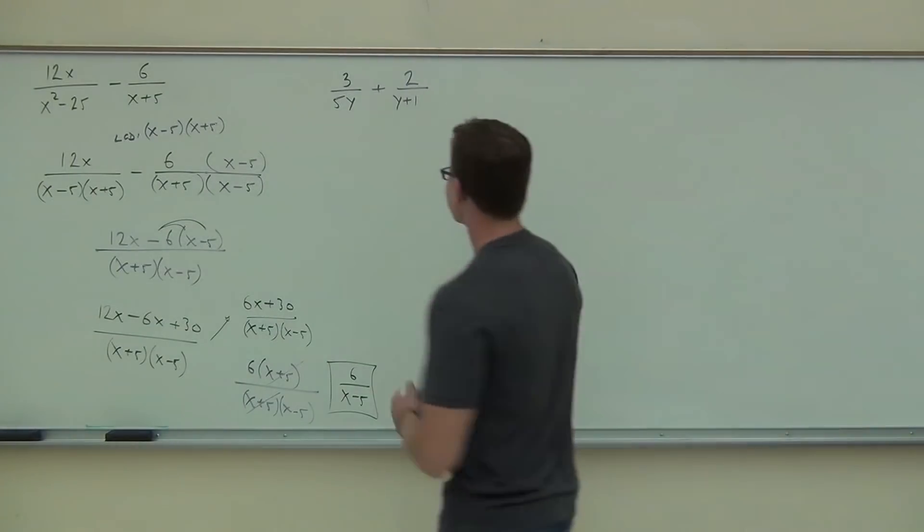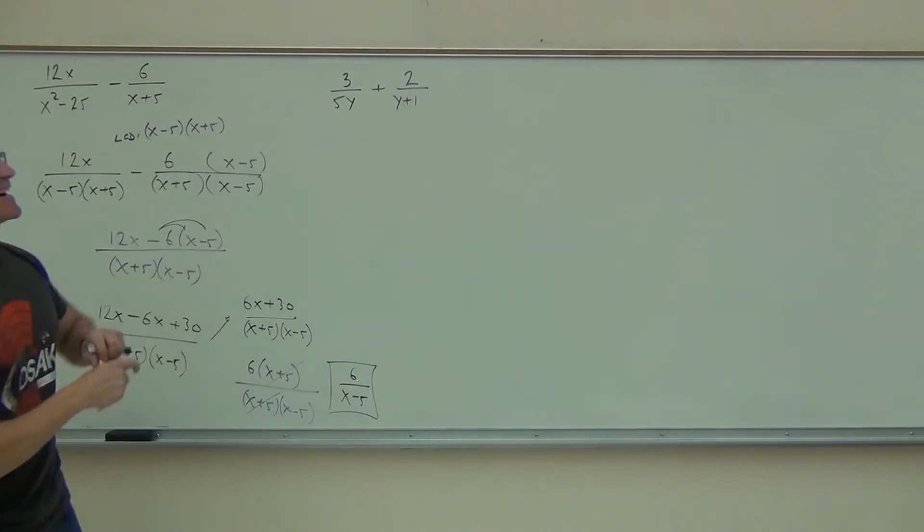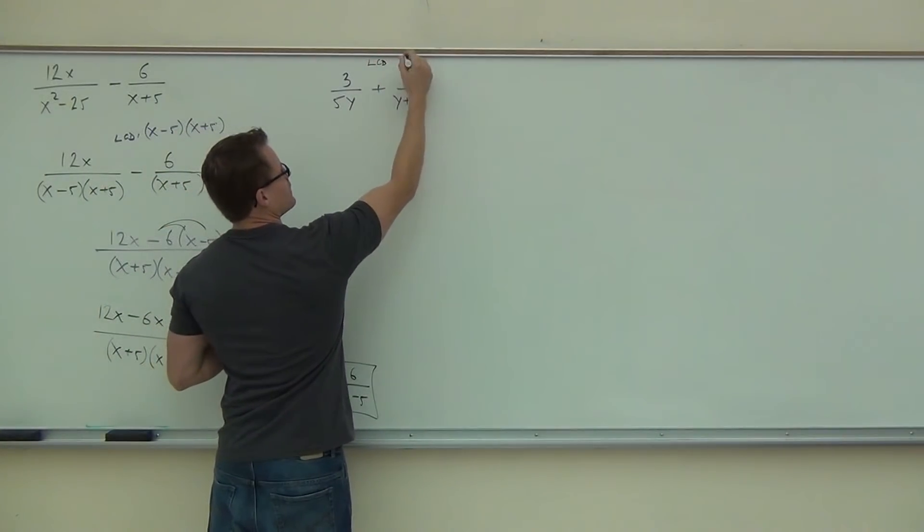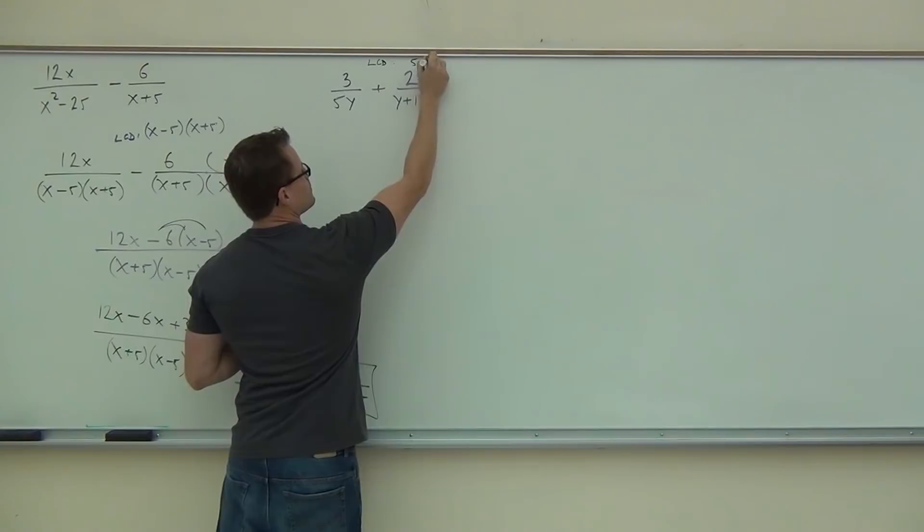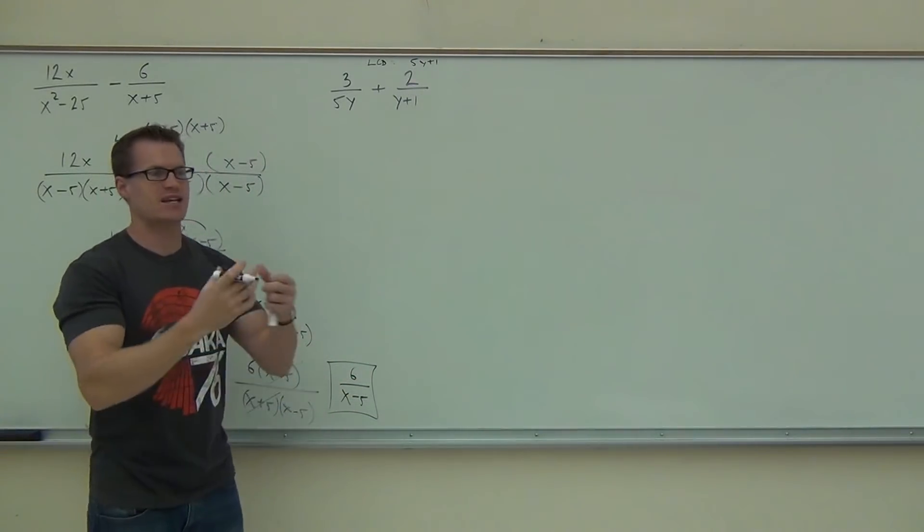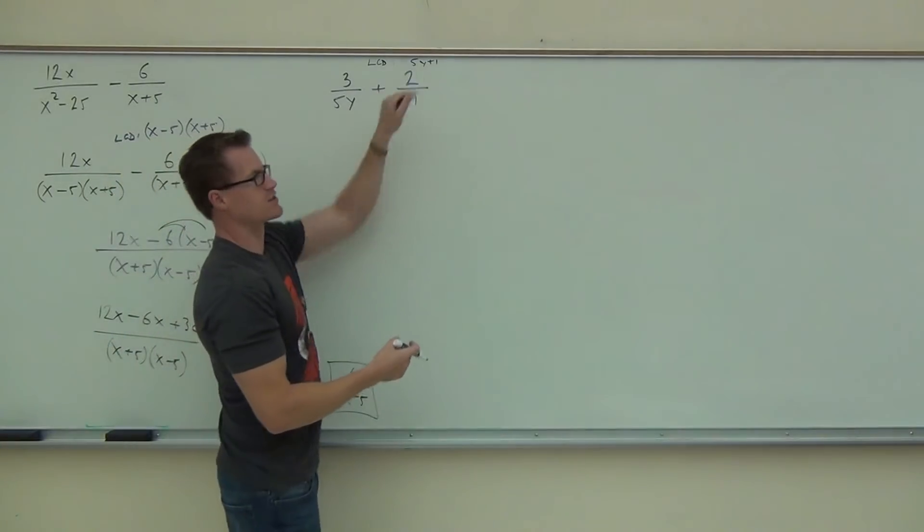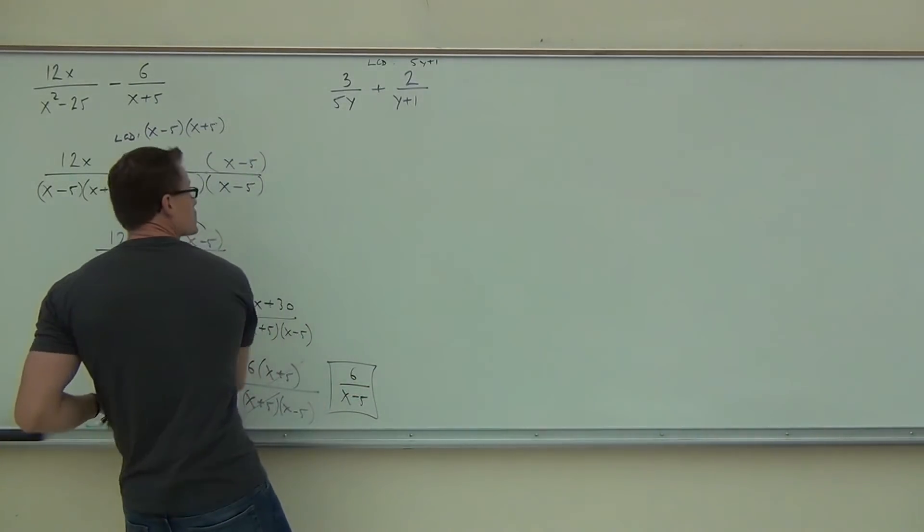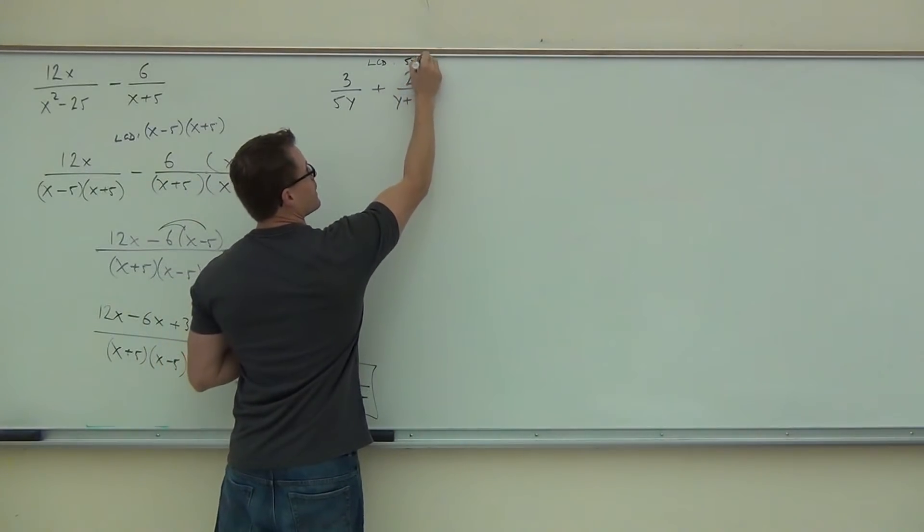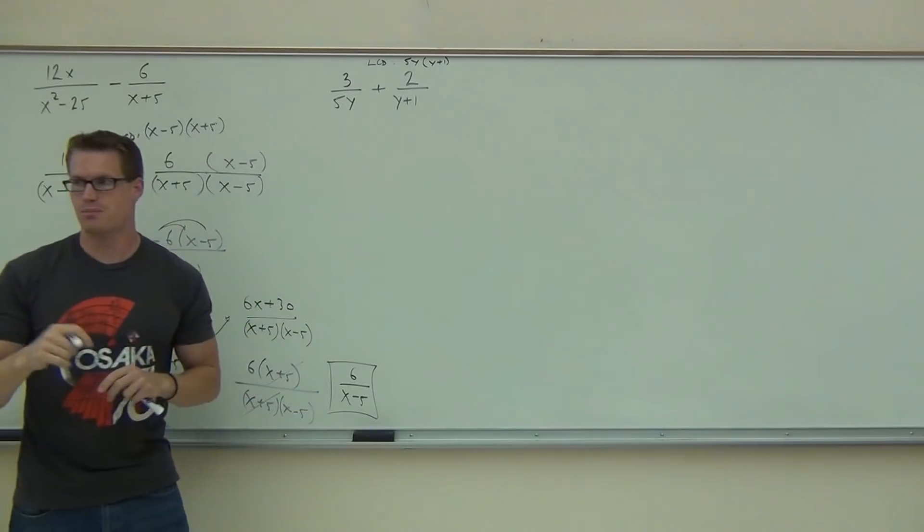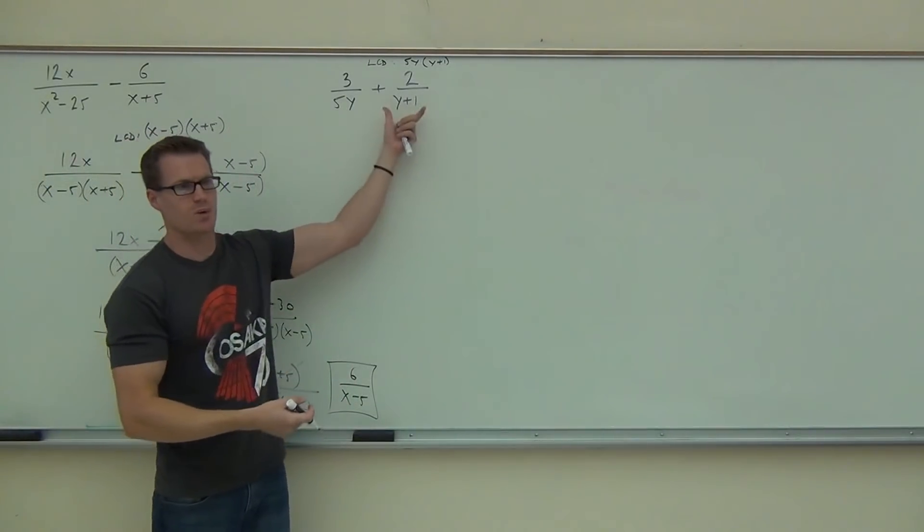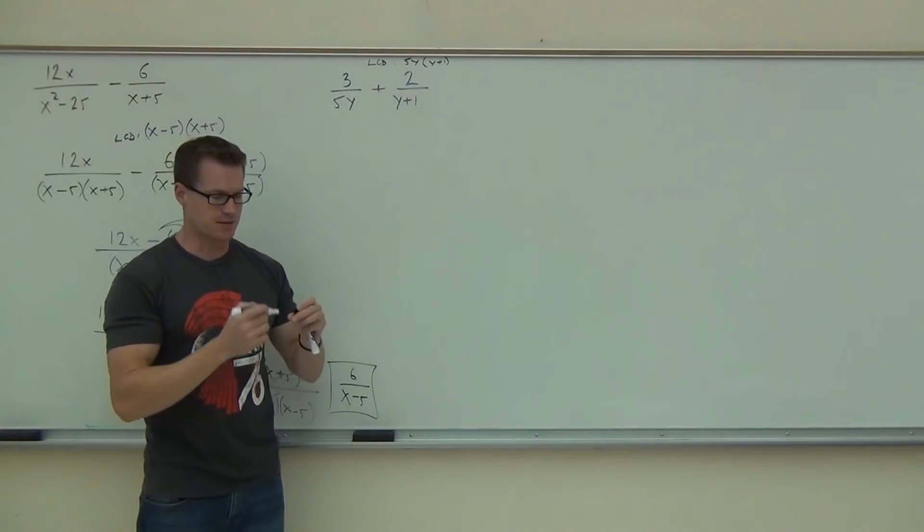All right. Next up, we did one just like this last time. I just want to refresh your memory on what to do. Firstly, question, is our LCD 5y plus 1? No, we can't do that. The 5y has to be a factor. Right now the 5y is a term that doesn't work for us. So our LCD in this case, we do need the 5y and we also need the y plus 1. Those both have to be there. Then we check and we go, do we have the 5y? Yeah. Do we have the y plus 1? Yeah. That's our LCD in this case.